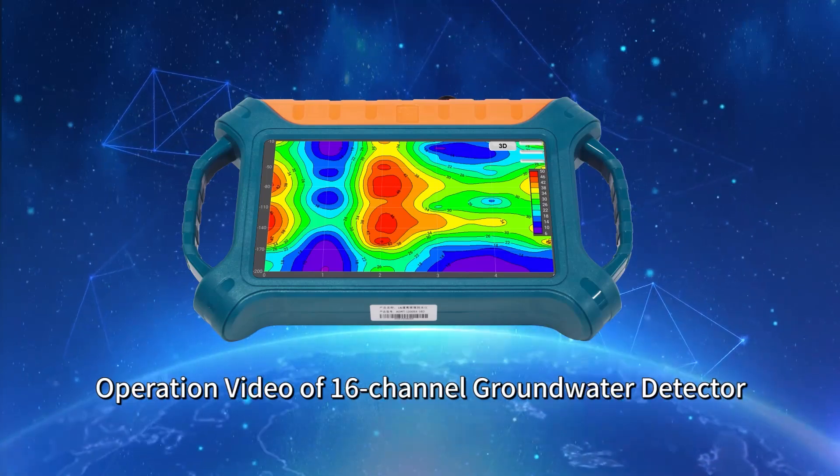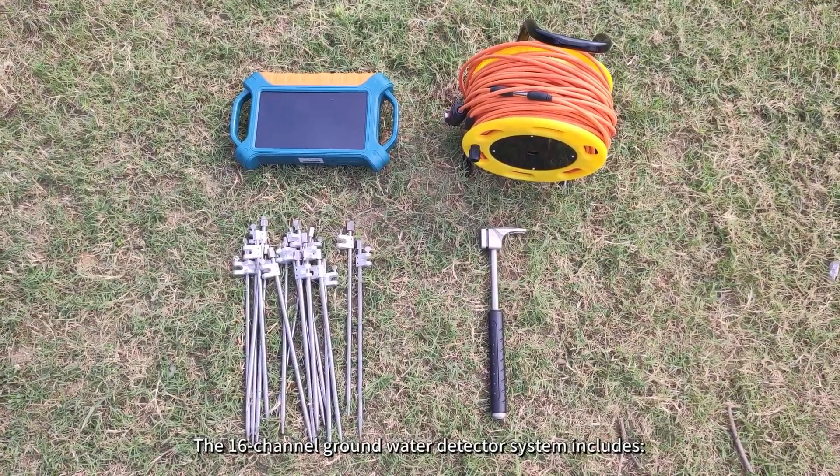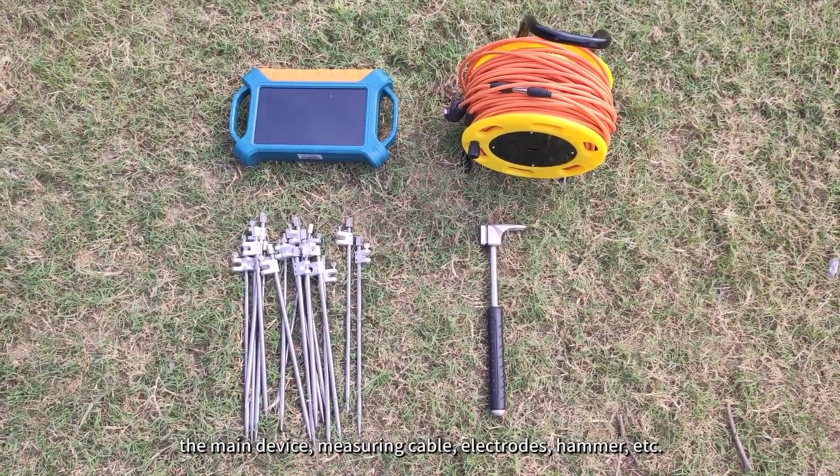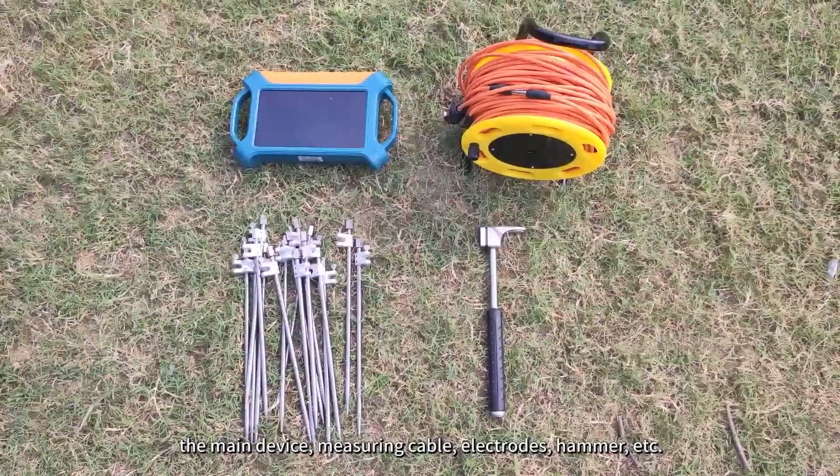Operation Video of 16-Channel Groundwater Detector. The 16-Channel Groundwater Detector System includes the main device, measuring cable, electrodes, hammer, etc.